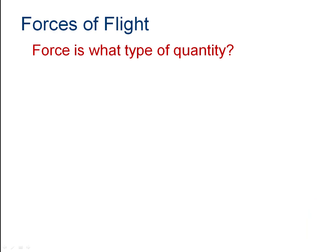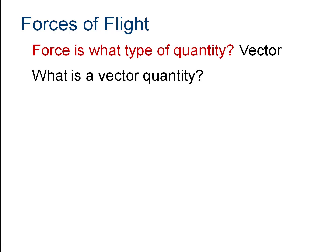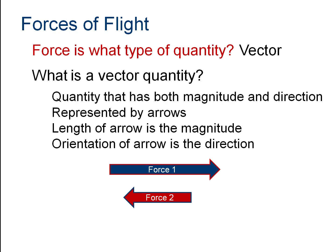When we talk about force, a force is a vector, which means it has both a quantity and a direction. Magnitude and direction are represented by arrows — the bigger the arrow, the bigger the magnitude. The orientation of the arrows is the direction. Force one acting to the right is positive; force two acting to the left is negative.